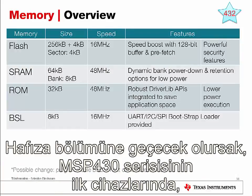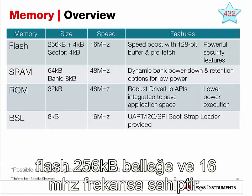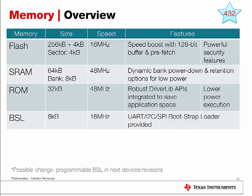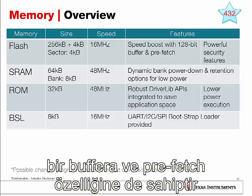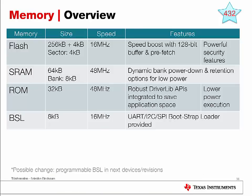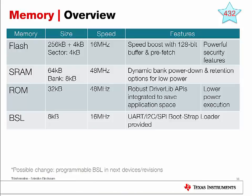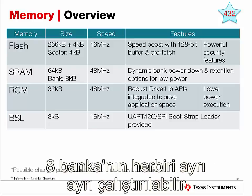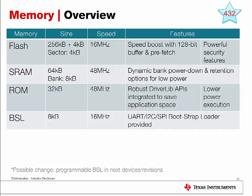Moving on to memory. On the first device of the MSP432 P series, the MSP432 P401R, the flash memory comes with 256 KiloBytes of memory. The flash operates at 16 MHz and contains speed boost capabilities with a 128-bit buffer and prefetch mechanism. The MSP432 P401R also comes with 64 KiloBytes of SRAM memory. These 64 KiloBytes are broken down into 8 banks, each with 8 KiloBytes, allowing you to individually control the power through each SRAM bank to optimize power.